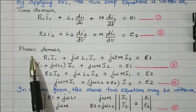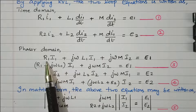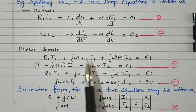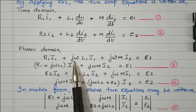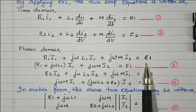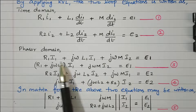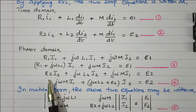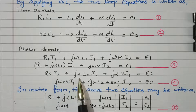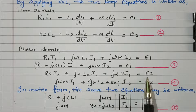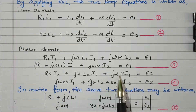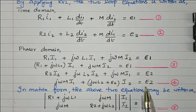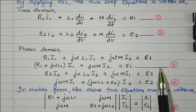In phasor domain, replacing d/dt with jω: equation 1 becomes R1·I1 + jω·L1·I1 + jω·M·I2 = E1. Taking I1 as common: (R1 + jω·L1)·I1 + jω·M·I2 = E1 — this is equation 3. Similarly, equation 2 becomes R2·I2 + jω·L2·I2 + jω·M·I1 = E2, which simplifies to jω·M·I1 + (R2 + jω·L2)·I2 = E2 — this is equation 4.